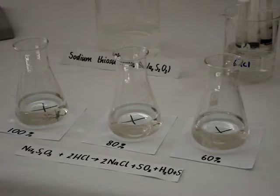In each of these flasks we have some sodium thiosulfate. They differ in concentration. The first one has 100% sodium thiosulfate, the middle one 80%, and the last one 60%. You can see that we've placed a piece of paper with a cross drawn under each of the flasks.